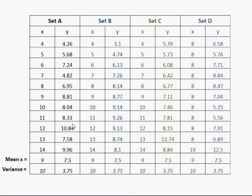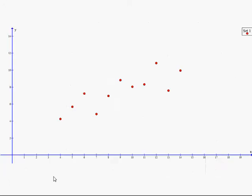So basically, all these sets of data have the same center, the same mean, and they have the same spread measured by the variance. So, okay, let's see what they look like.